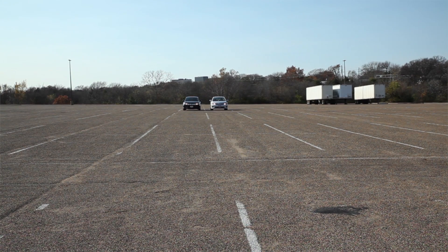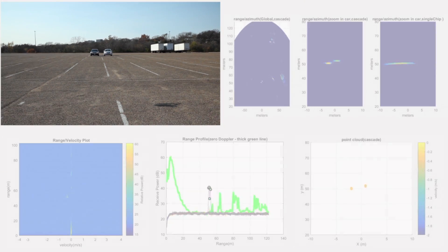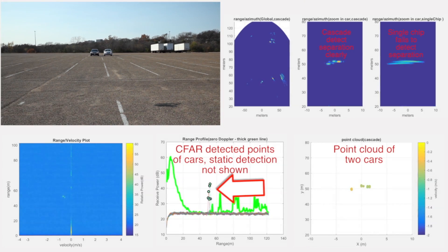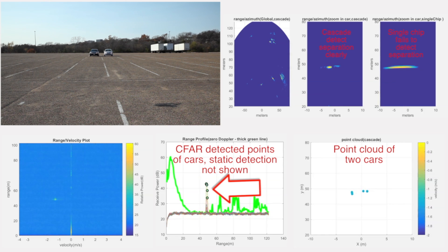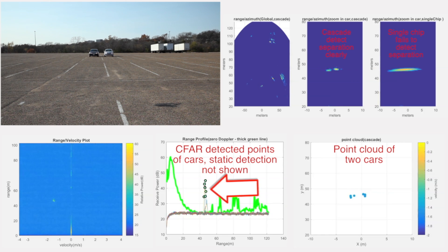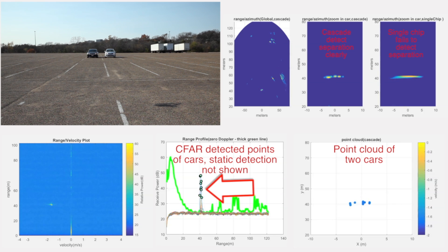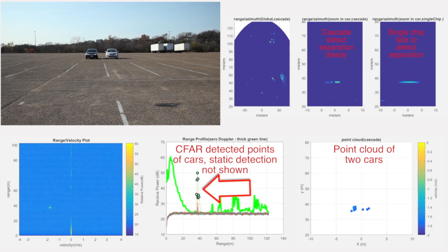In the next video, we demonstrate the cascade radar's ability to detect two cars on two adjacent lanes at around 60 meters. The two cars drive at similar velocity at the same distance. The high angle resolution of the cascade radar helps resolve the two cars.